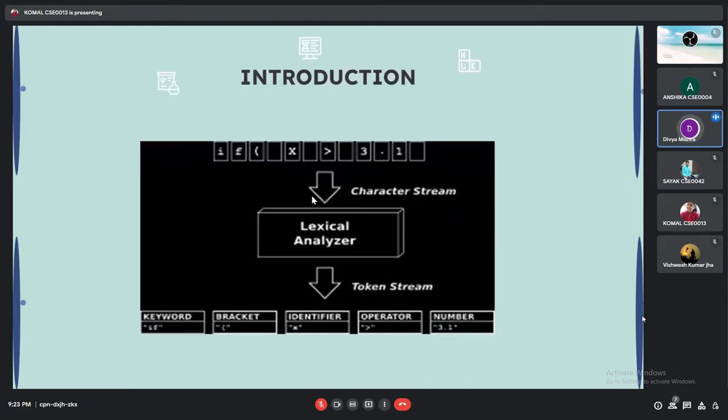Tokens include identifiers, separators, keywords, operator, constant and etc. DFA and NFA convert the program into tokens. Now we will see one of the code.